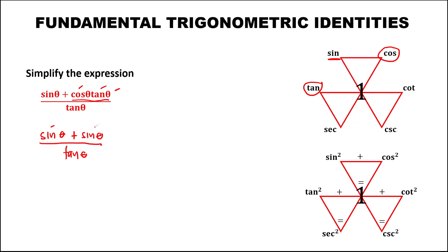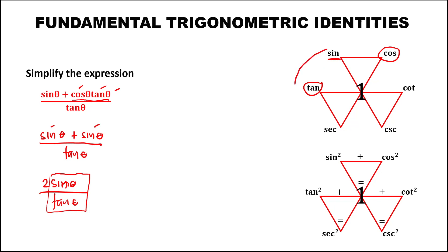We now have sine theta plus sine theta over tangent theta. For the ratio of two functions, the result is the function before them. We have sine over tangent, and the function before them is cosine. So sine over tangent equals cosine. Bringing down the 2, the expression becomes 2 times cosine theta.